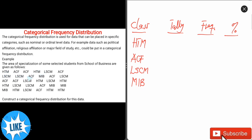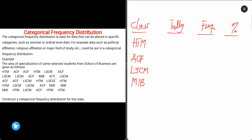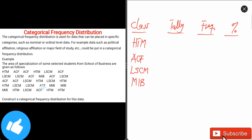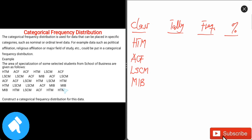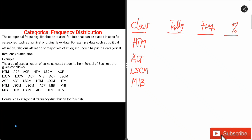Counting the tally for HTMI: we go through the data row by row — one, two on the first portion; then one making three, four, five on the third row; then six, seven, eight on the last row. So HTMI has a tally of 5 strokes plus 3, giving a frequency of 8.